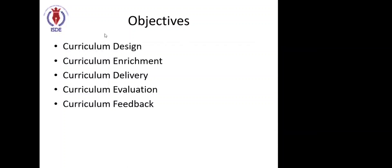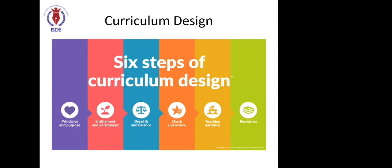I hope my slide is clear to all — sorry for the network issue. Starting from here, first you have to ensure that we are having a SOP for all five elements in your institution, and then we can move forward. These are the six steps of curriculum design.